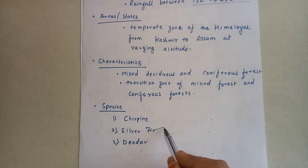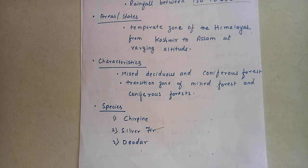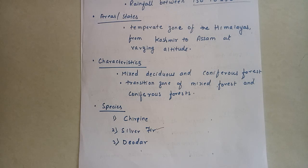The second species is silver fir. It is used for paper, pulp, matches, planking, and packing cases. It is found in the northwest and eastern Himalayas.